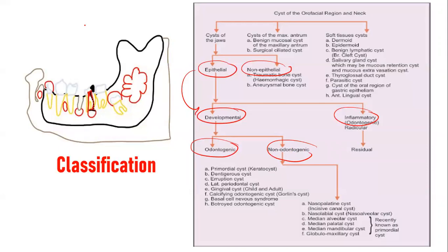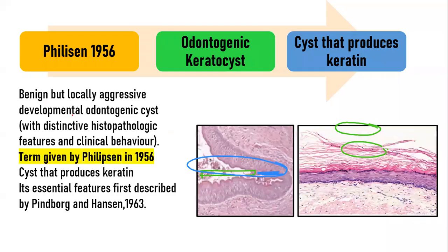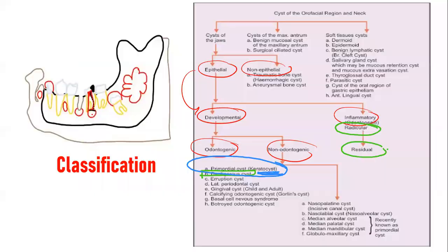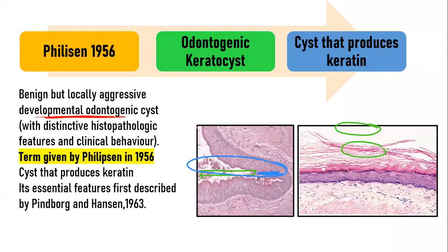We have already covered the developmental odontogenic cyst, which is the dentigerous cyst, and the inflammatory odontogenic cyst, which is the radicular cyst and residual cyst. In this video, we will talk about the primordial cyst, earlier called the primordial cyst, or now called the odontogenic keratocyst. So this is a developmental odontogenic cyst.